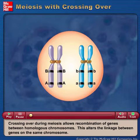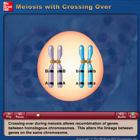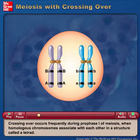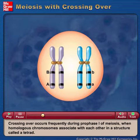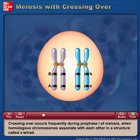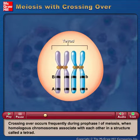Crossing over during meiosis allows recombination of genes between homologous chromosomes. This alters the linkage between genes on the same chromosome. Crossing over occurs frequently during prophase I of meiosis, when homologous chromosomes associate with each other in a structure called a tetrad.